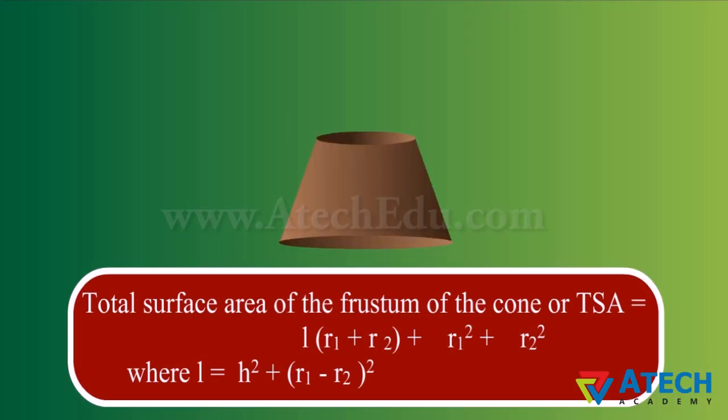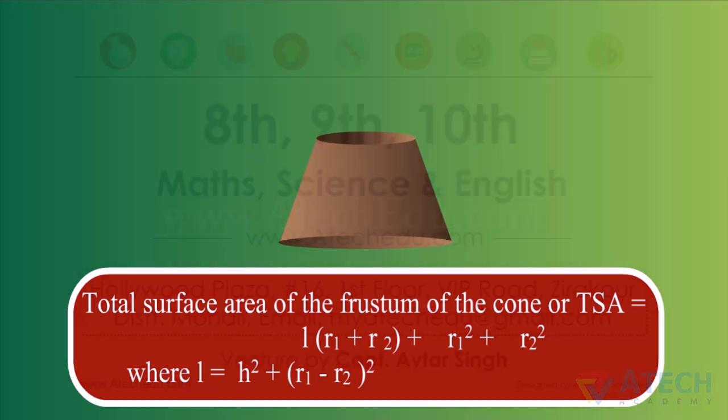Also, the total surface area can be calculated, which is the sum of the curved surface area, or CSA, and the area of the two bases.